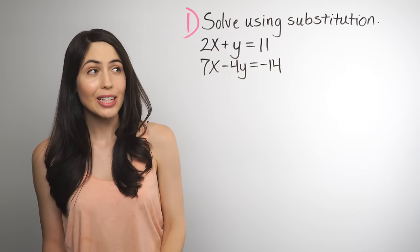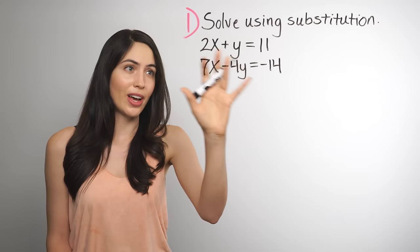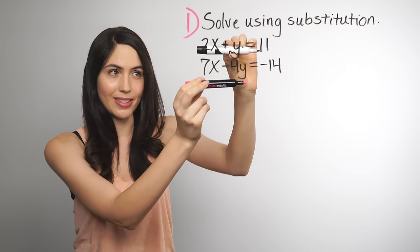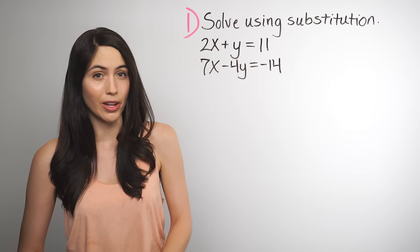So say that you have to solve a system of equations using substitution. What does that mean? It just means find x and y — find the x and y values that work for both equations in the system, that make both of them true. And if you have to solve using substitution, there are three steps you can always follow.